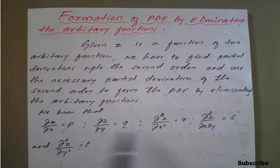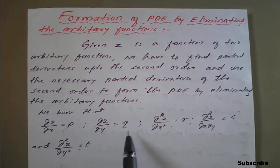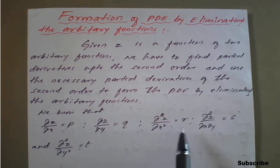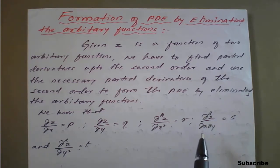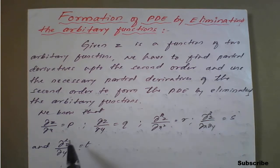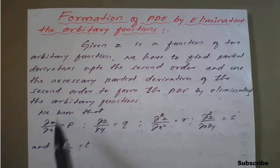We have these basics: dou z by dou x is equal to p, dou z by dou y is equal to q, dou square z upon dou x square is equal to r, dou square z upon dou x dou y is equal to s, and dou square z upon dou y square is equal to t. With the help of this, we move to the next kind of examples.